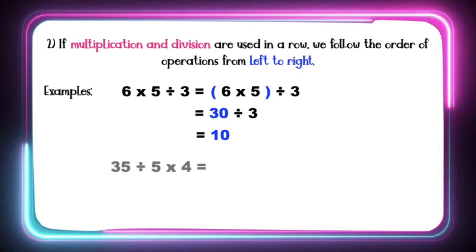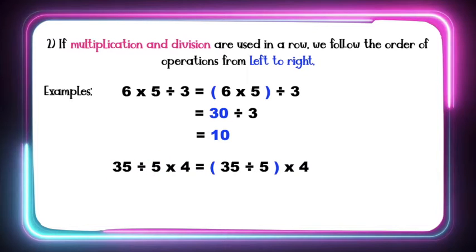Let's have another example. What if I have 35 divided by 5 times 4? As you can see from the left, we have division first, so we are going to divide first. 35 divided by 5 is equal to 7. Then we are going to multiply it by 4. 7 times 4 is equal to 28. So 35 divided by 5 times 4 is equal to 28.